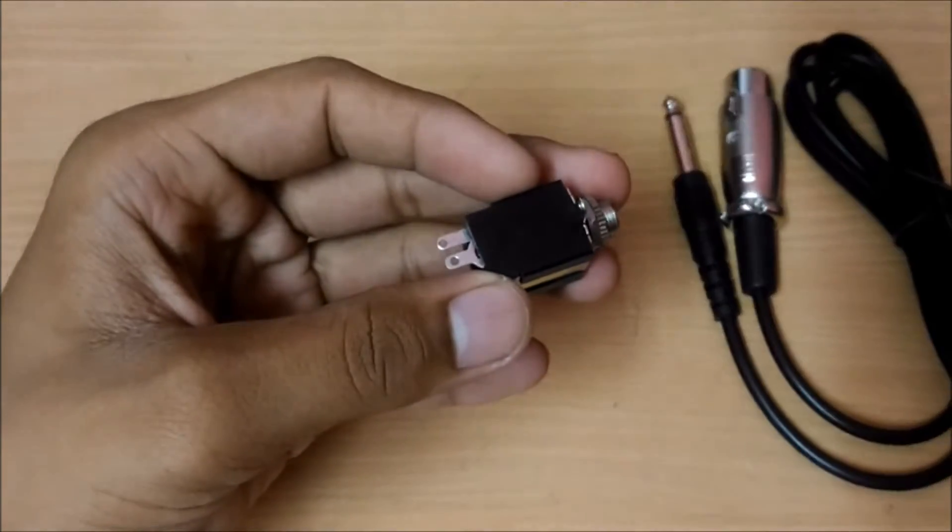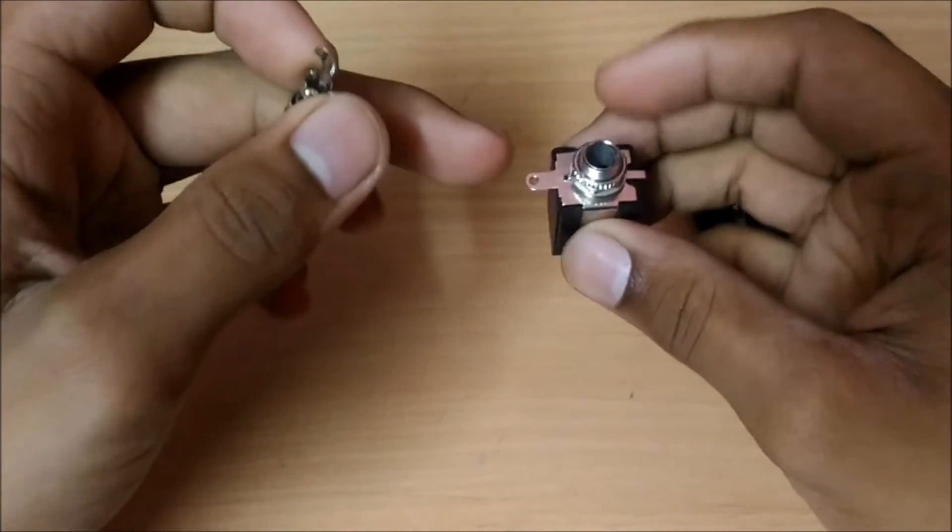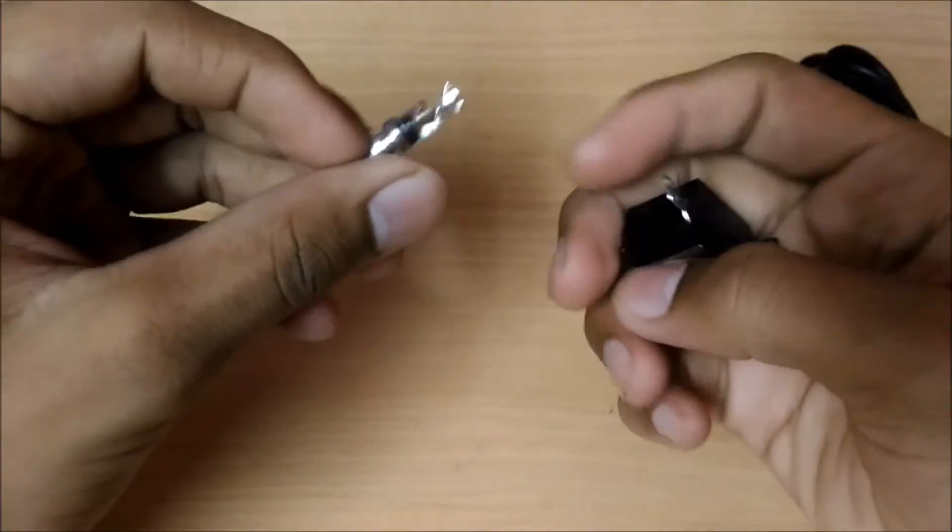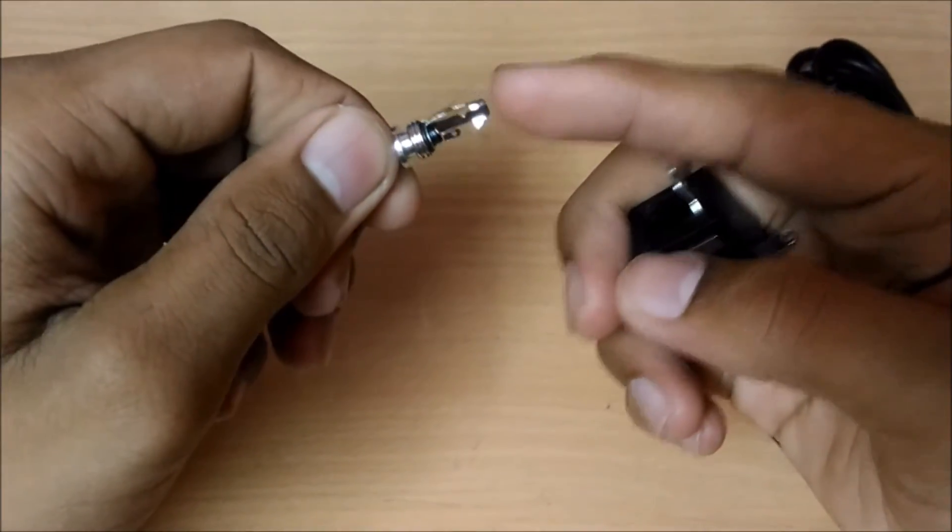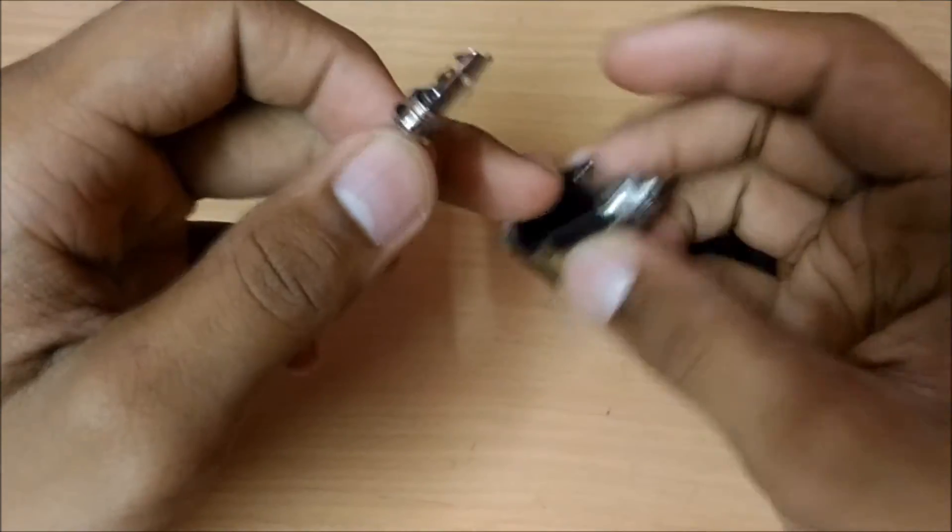So what you're going to need to do is that you have to solder the terminals of both. So here you can see it has three terminals and into this jack it also has three terminals. So this is the base one terminal.